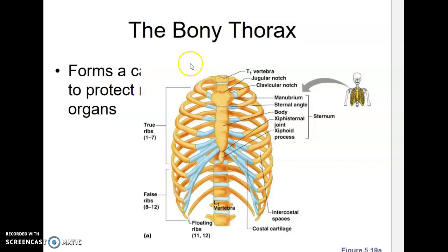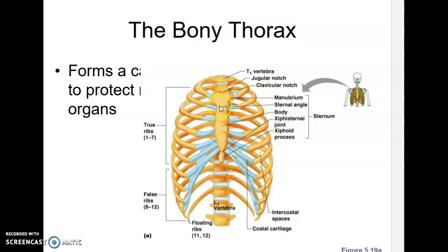We have a total of 12 ribs counted from top to bottom. The first seven are called true ribs and they connect directly — via hyaline cartilage — from the rib facets on the thoracic vertebrae to the sternum. One, two, three, four, five, six, seven — I can follow the cartilage directly to the sternum.